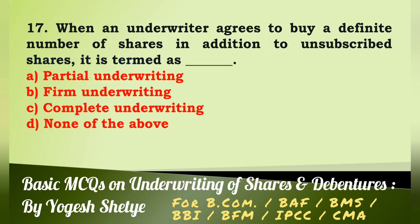Question 17: When an underwriter agrees to buy a definite number of shares in addition to unsubscribed shares, it is termed as — (a) partial underwriting, (b) firm underwriting, (c) complete underwriting, (d) none of the above. Answer: It is termed as firm underwriting. Answer B.